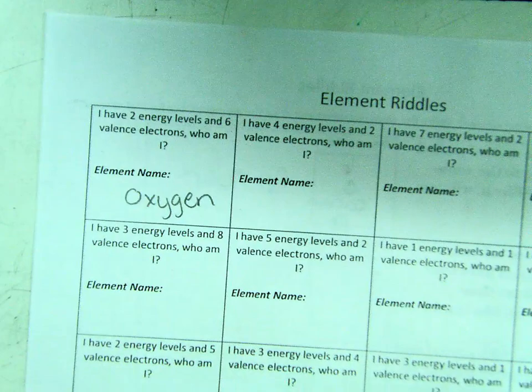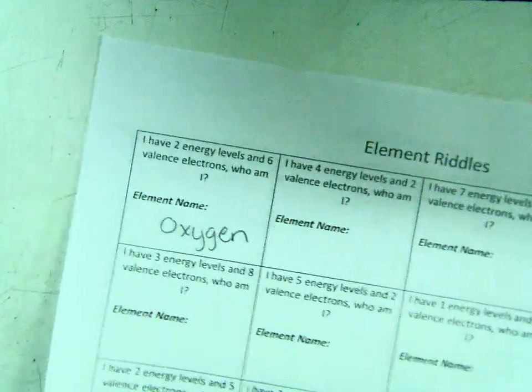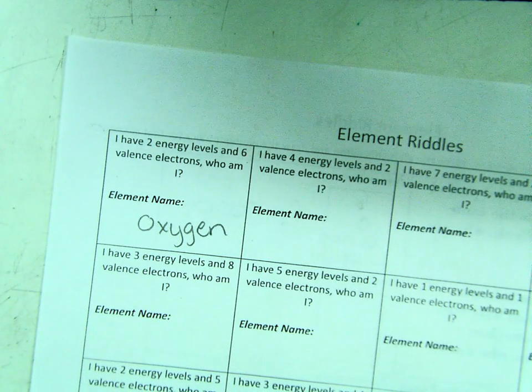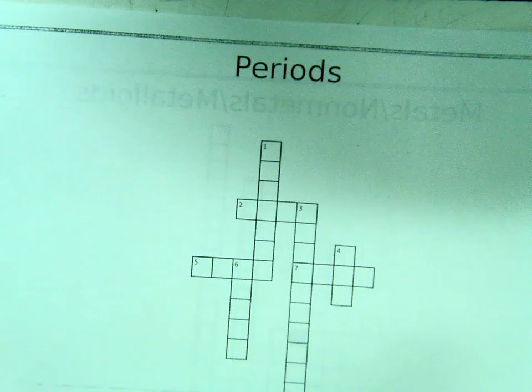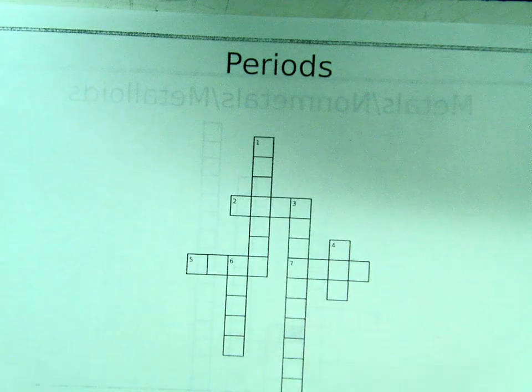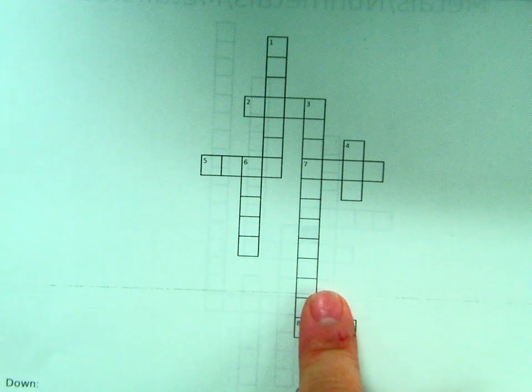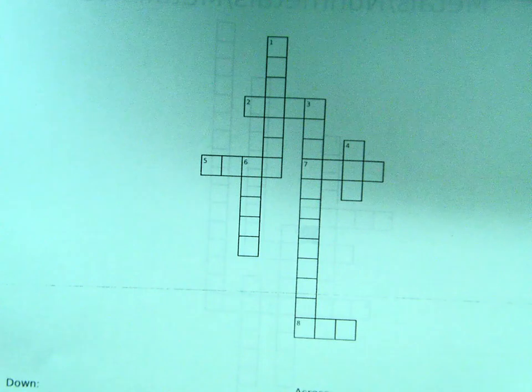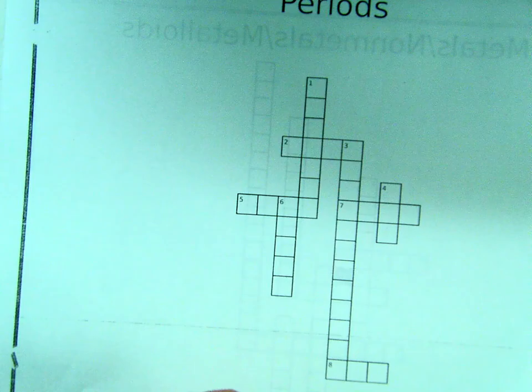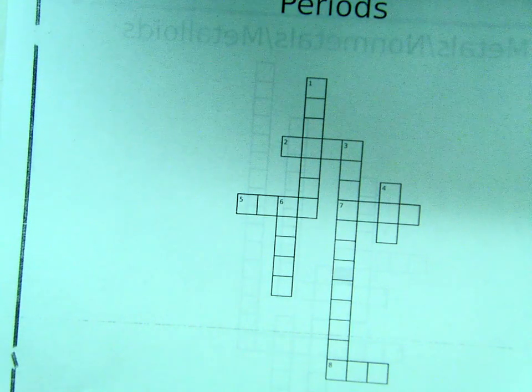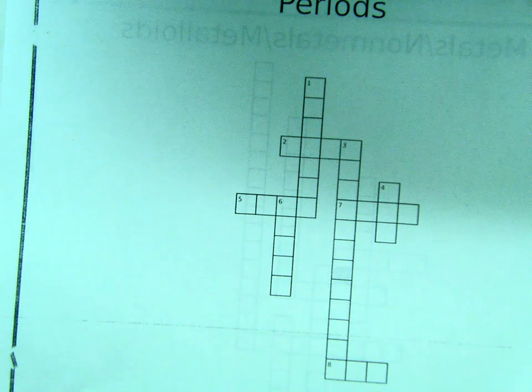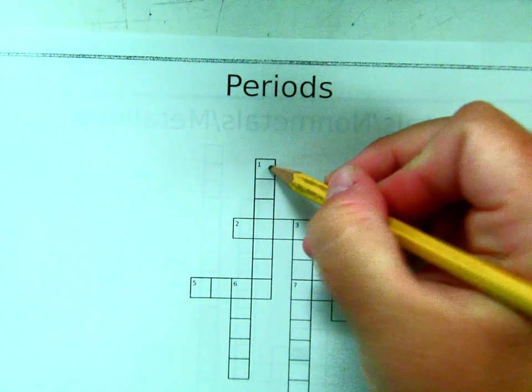After you've completed your element riddles, you have some crossword puzzles to start on. You have one that's periods down here. It's going to tell you or help you figure out what word fits where. So the horizontal rows, horizontal means this way, of the periodic table are called. Now notice this is one down, so we're going to come up here one down and these are called periods.